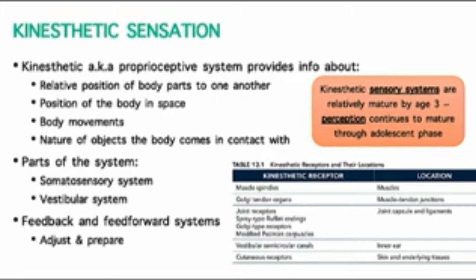There are different parts of kinesthetic sensation. There's the somatosensory system, which includes differentiated proprioceptors that relay information from stimuli applied to our muscles, tendons, ligaments, and skin. They provide us the ability to make postural adjustments based on stretch detected in muscle-tendon apparatuses.